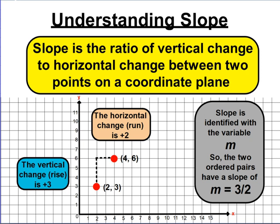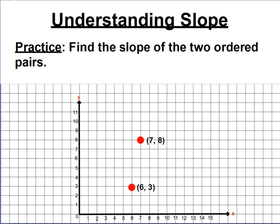One last thing about slope: slope is usually identified with a specific variable in equations, and that variable is m. So one way to show slope is to say m equals 3 over 2, or 3 halves. When you see the variable m in equations, that means it represents what the slope will be. So take a second, hit pause, and try to find the slope generated from the two ordered pairs shown. Then unpause and check if you calculated the correct slope.